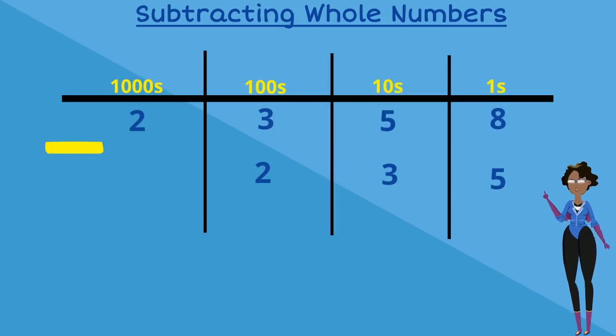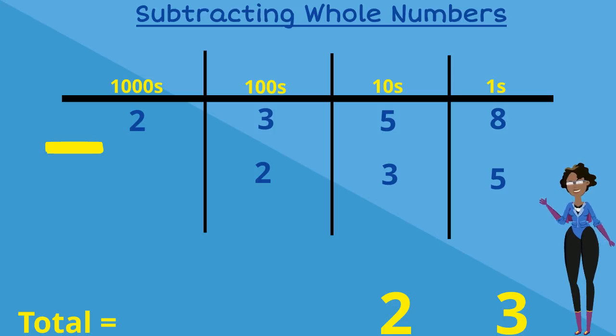Let's place our numbers into the place value chart with our bigger number on top and begin our subtraction. In our ones column we have 8 subtract 5, which is equal to 3, so 3 goes under the ones column. 5 take away 3 are the numbers in our tens column. This is equal to 2, so 2 goes in our total space under the tens column.